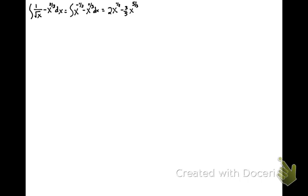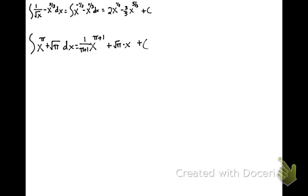For the last example, we've got the integral of x to the pi power plus the square root of pi, which is just a constant, dx. Pi is just a number, so x to the pi must have come from x to the pi plus 1, and my coefficient must have been 1 over (pi plus 1). The square root of pi is a constant, so this would be plus root pi times x plus c. So there are 15 different examples of integrating just by reversing the power rule. In the next video, we'll consider some tricks you may have to follow.